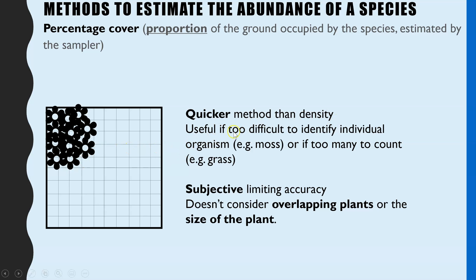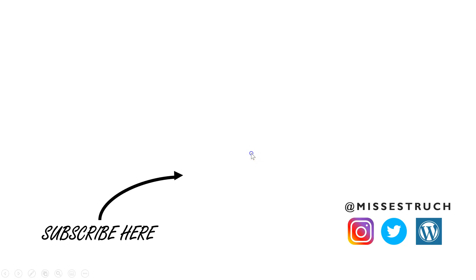Percentage cover is quicker than density and more useful when it's too difficult to identify an individual organism or there are too many to count. The downside is it's subjective — one person might say 18%, another might say 20%, so accuracy is limited by personal estimation. It also doesn't take into account overlapping plants or the size of the plant. And that is it for sampling and the types of questions you get for required practical 12.